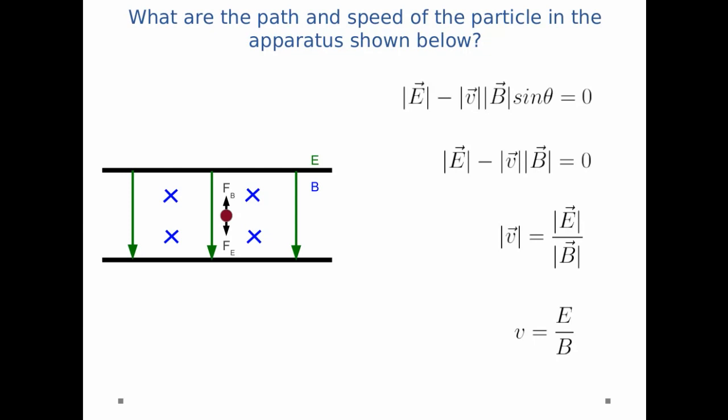If the velocity is slightly bigger than E over B, it will be deflected upward because of the magnetic field. If it has a velocity slightly smaller than E over B, it will be deflected downward because of the electric field.